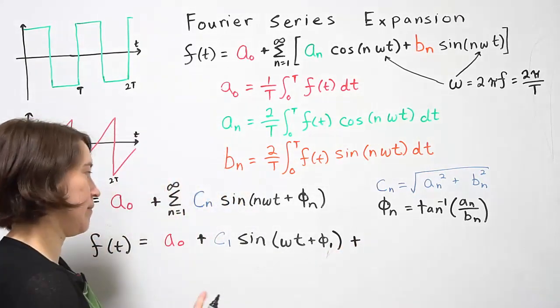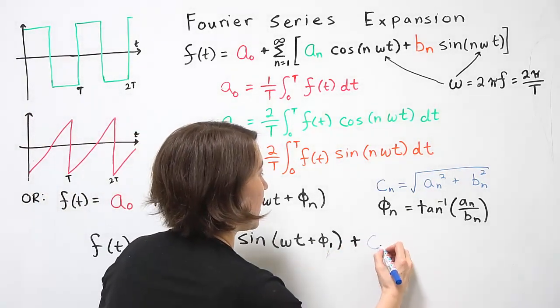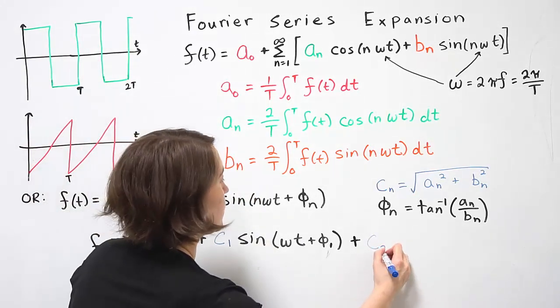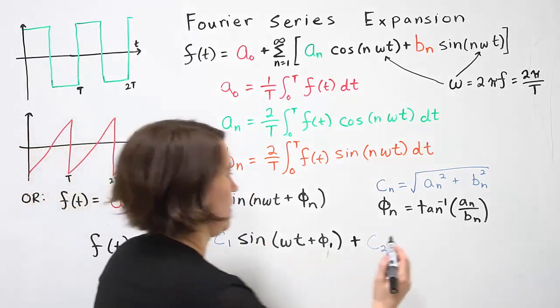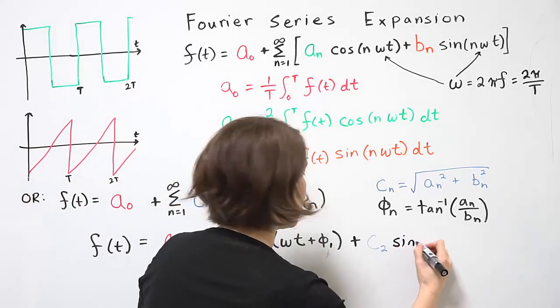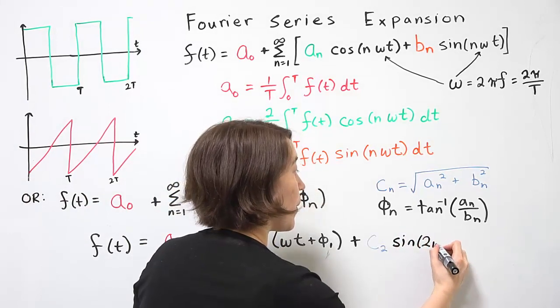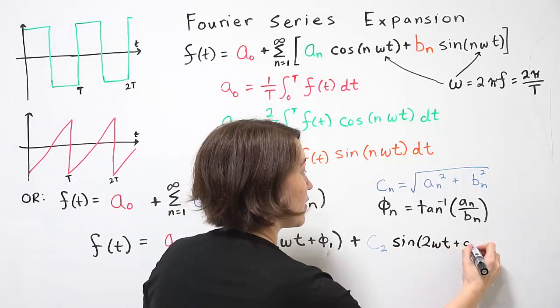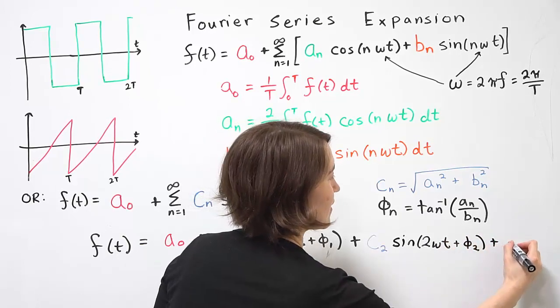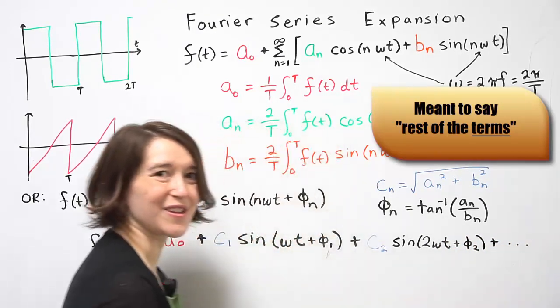Now let's write out the second one. We would evaluate at n equals 2, so c₂ sine of 2ωt plus φ₂ plus the rest of the coefficients.